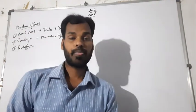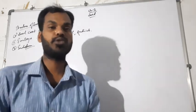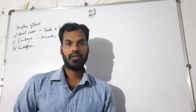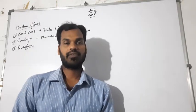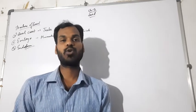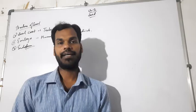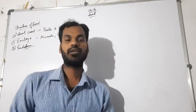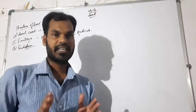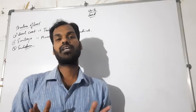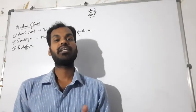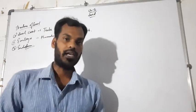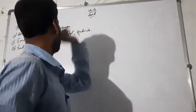Good morning dear students. Today I am here to start a new chapter, that is Chapter Number 6: Seed Structure and Germination. A seed is a matured and fertilized ovule which is enclosed inside the fruit. After the fruit, we will get the seed inside. The seed contains many different parts, based on which it has the capacity to germinate into a new plant once it is sown in the soil.